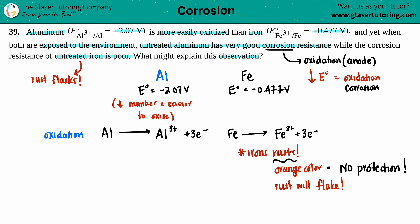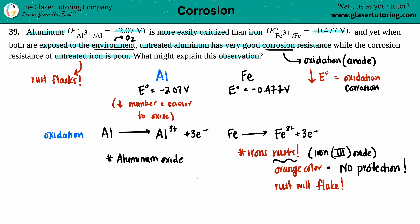When aluminum is exposed to the environment, aluminum oxide (Al₂O₃) forms because it reacts with O₂. Iron, on the other hand, forms iron(III) oxide (Fe₂O₃), which is rust. But aluminum oxide, unlike rust, forms a protective layer. Once that protective layer is formed from exposure to the environment, there is no flaking.